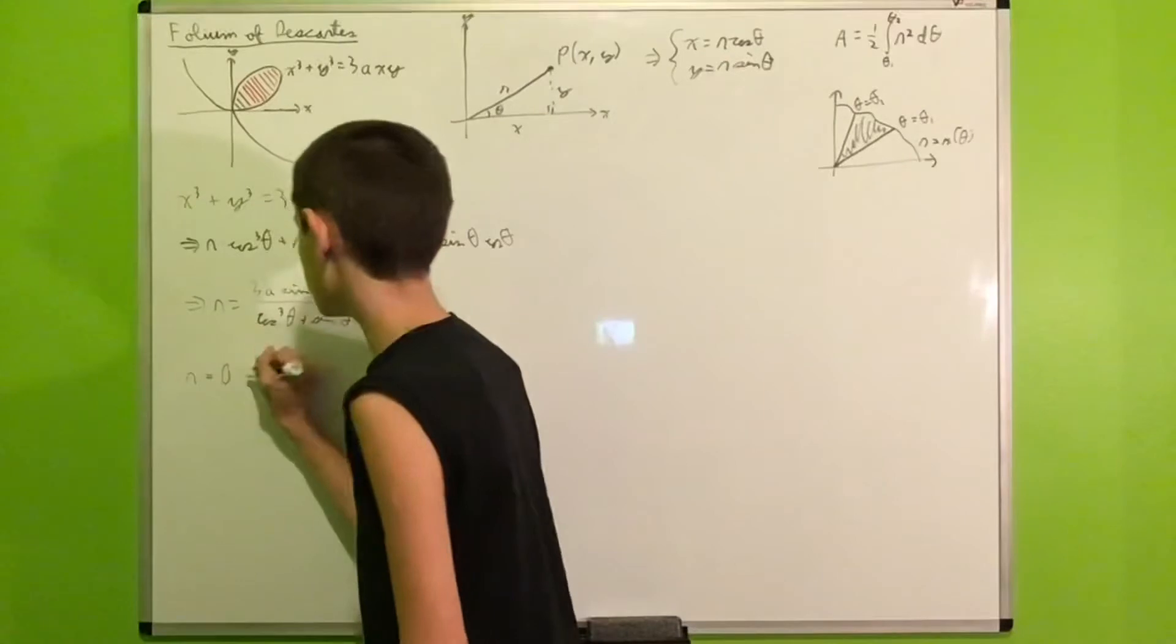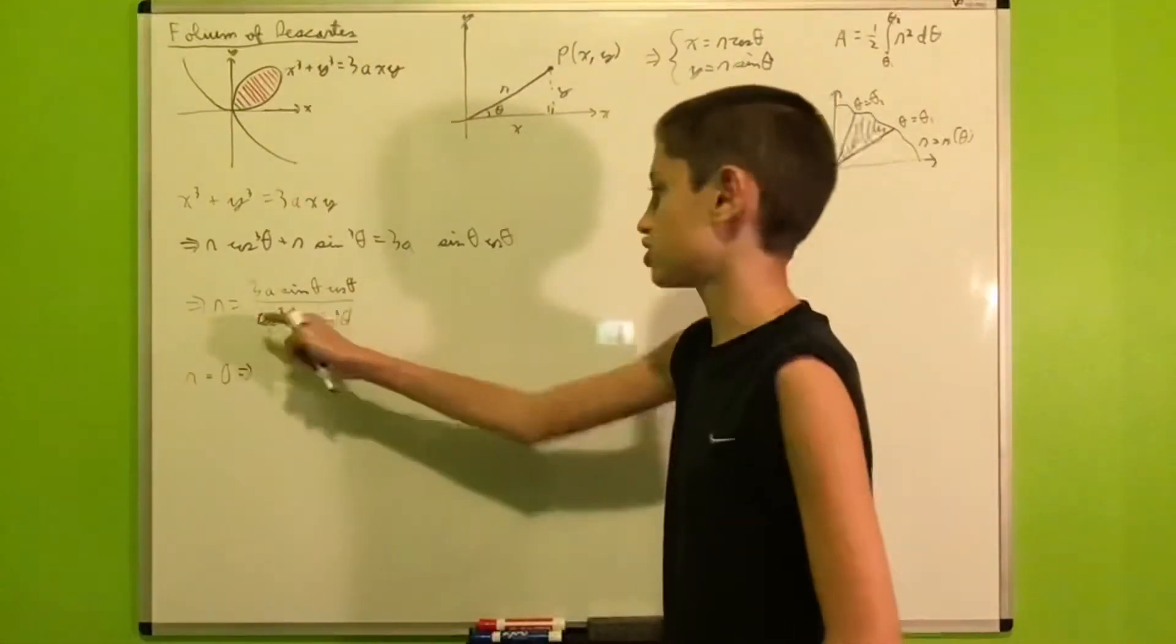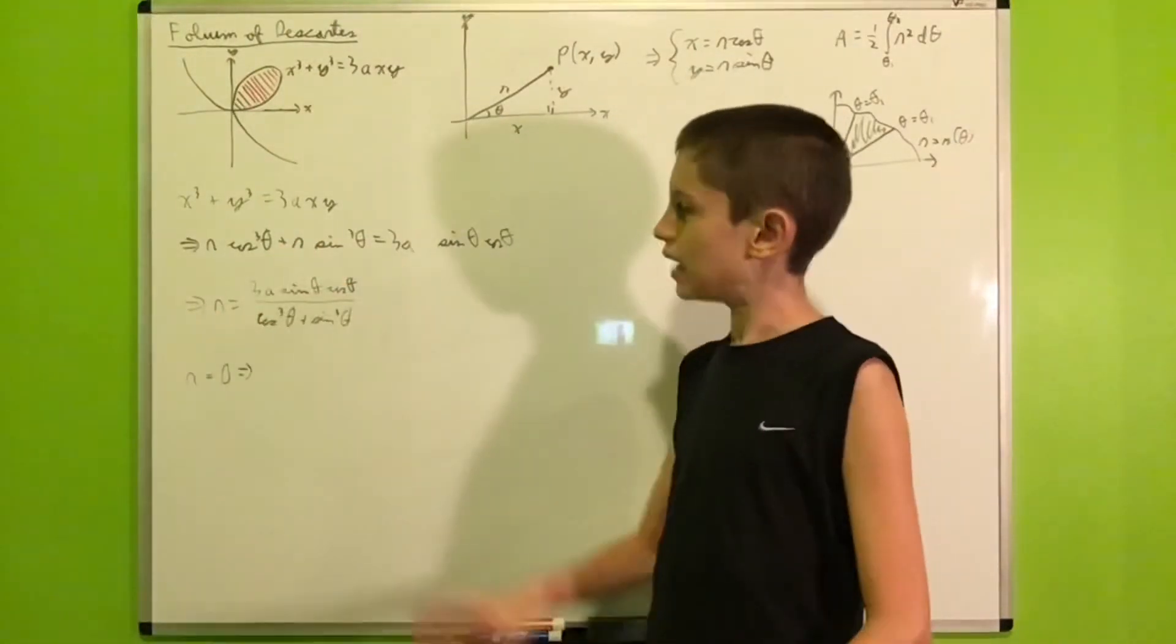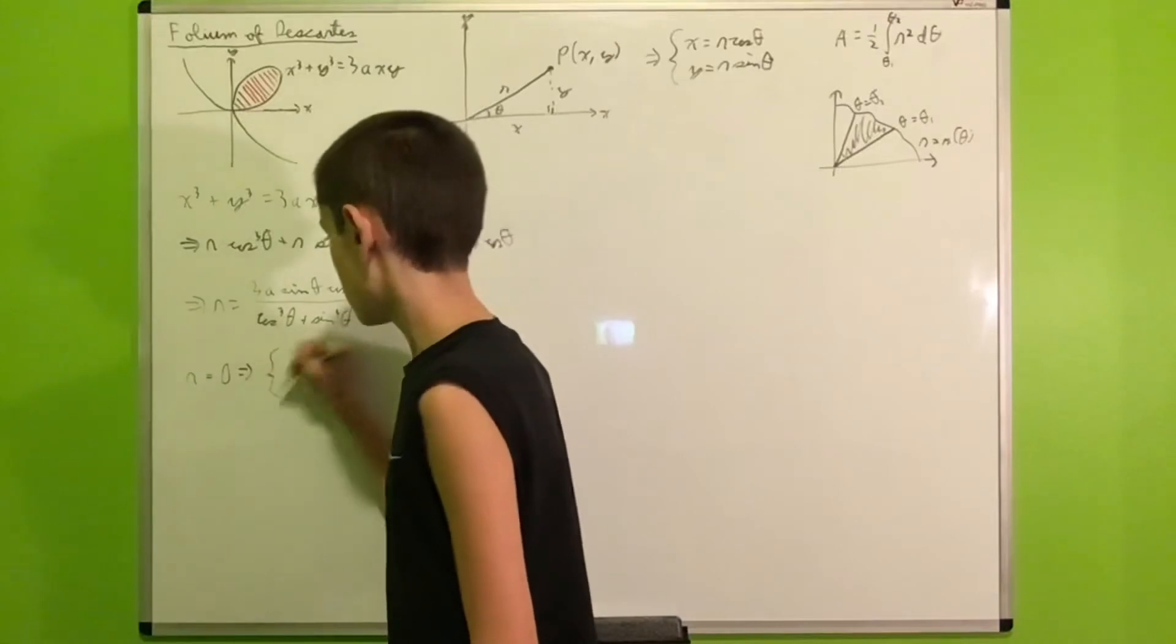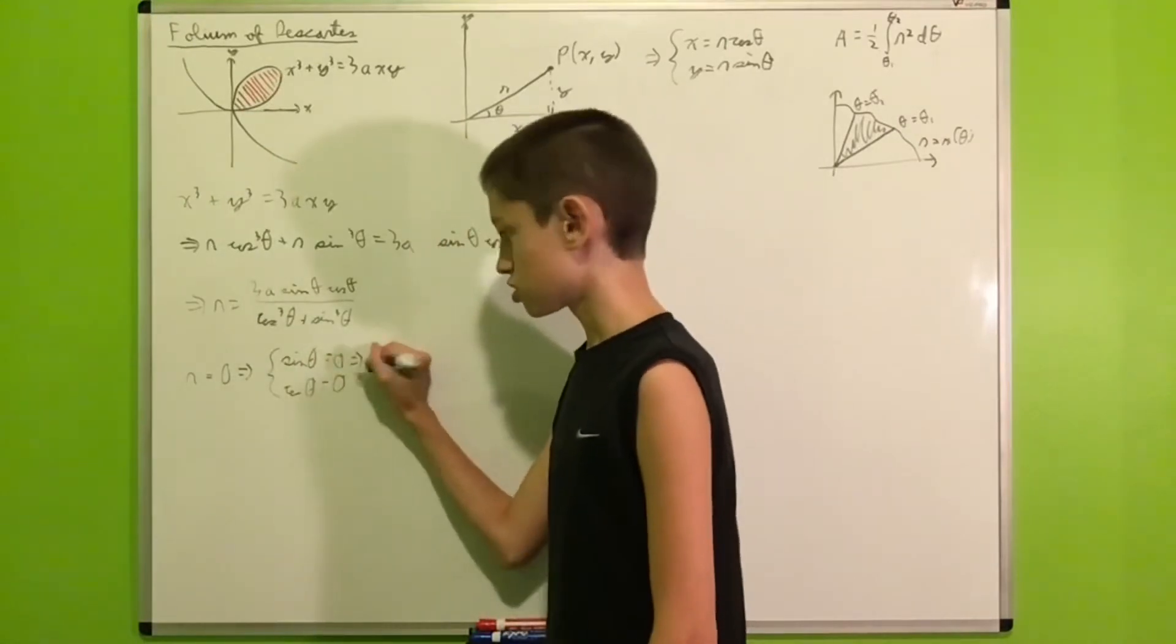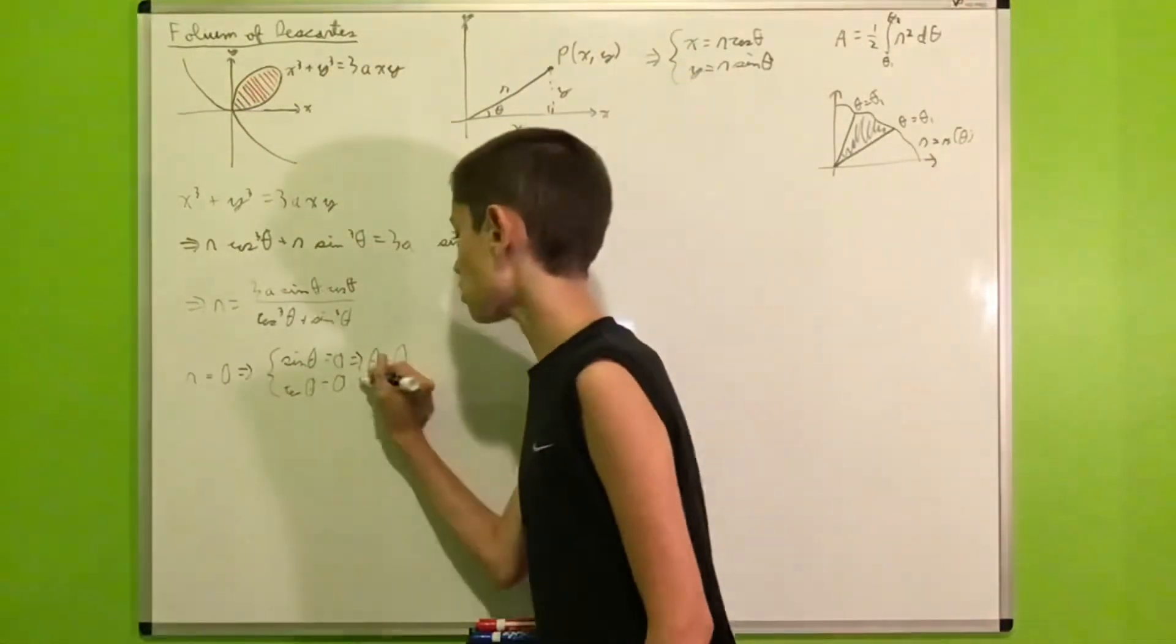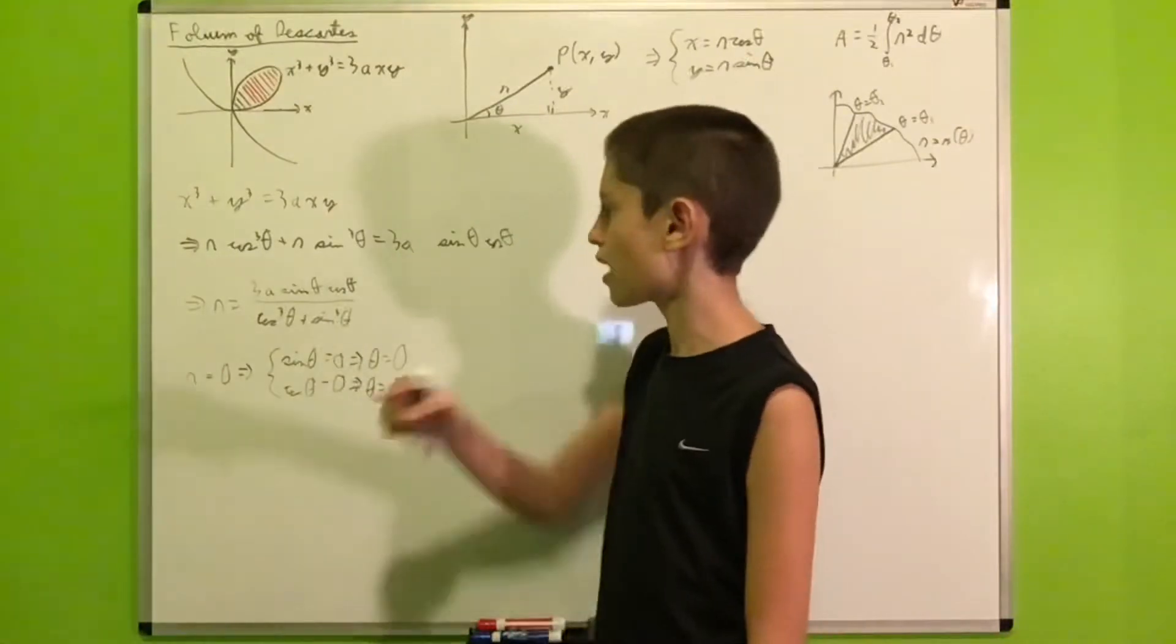So, if R is equal to 0, then the numerator must be equal to 0, under the condition that the denominator is not equal to 0. So, if 3a sine theta cosine theta is equal to 0, 3a can never be equal to 0, which means it leaves us with sine theta cosine theta being equal to 0. So, this leaves us with two options. Sine theta is equal to 0, or cosine theta is equal to 0. So, if sine theta is equal to 0, then it means that theta must be equal to 0. We will ignore all the multiples of pi and everything. And likewise, if cosine theta is equal to 0, then theta is equal to pi over 2.